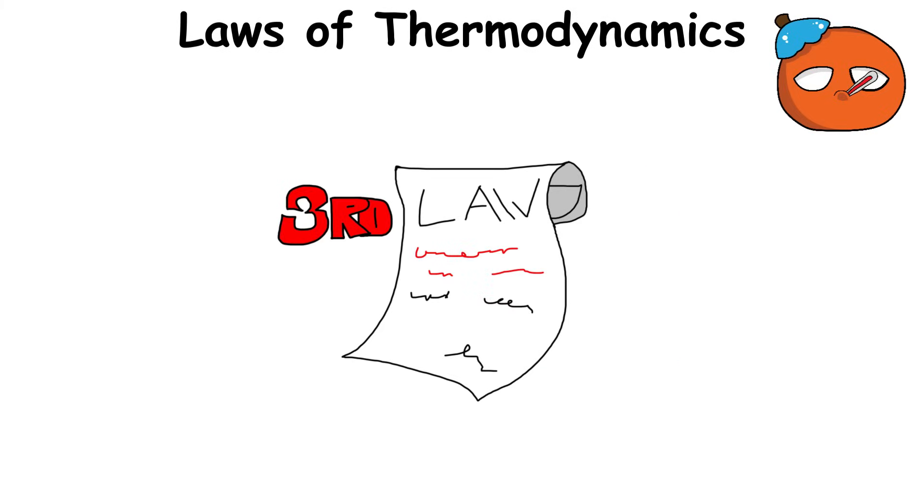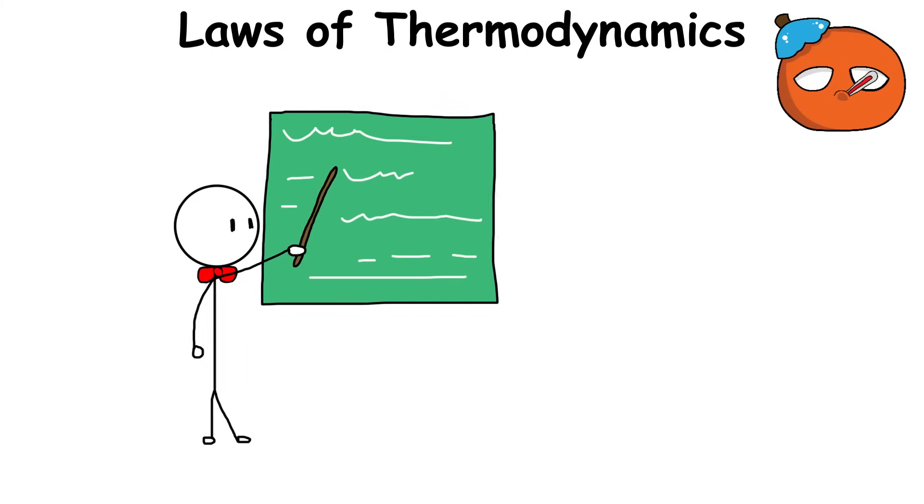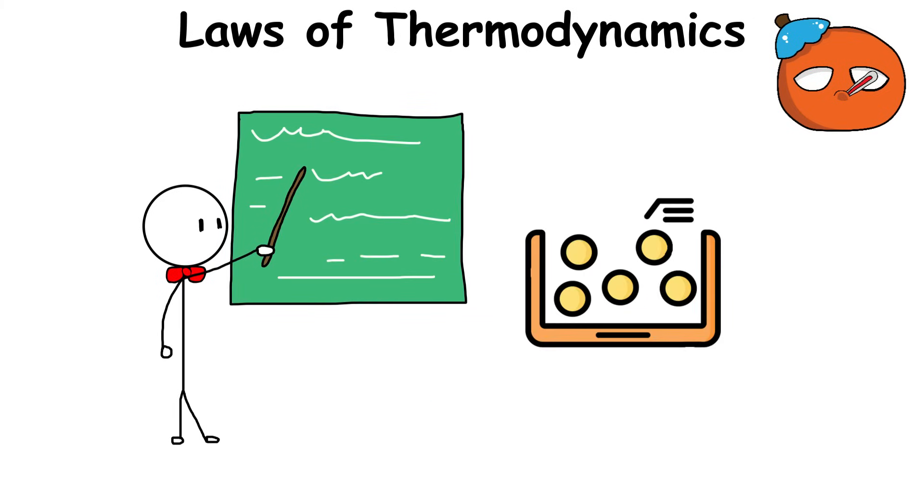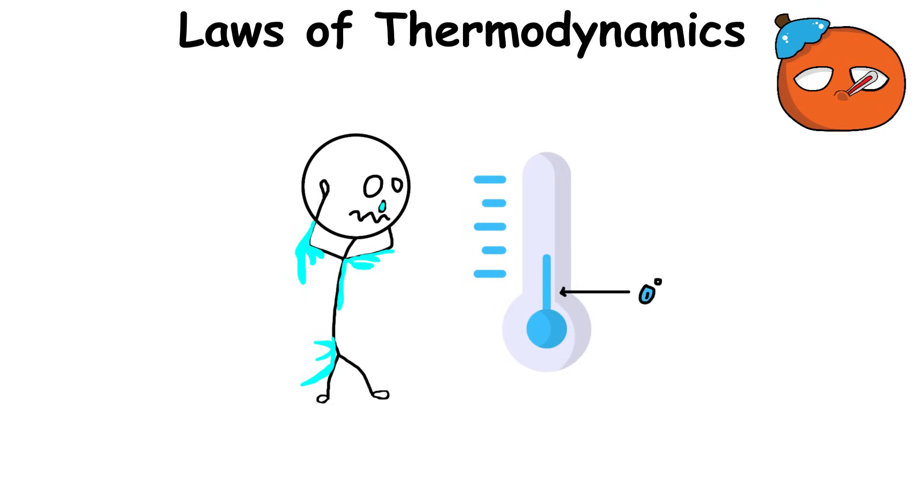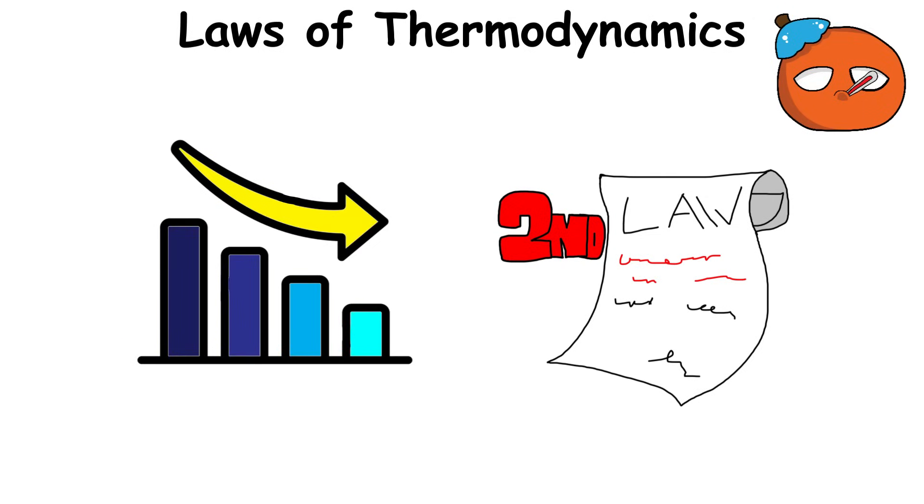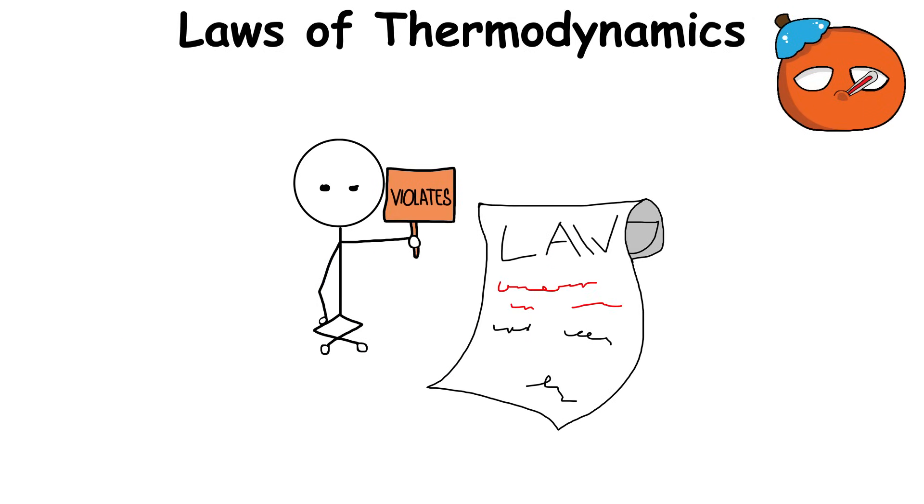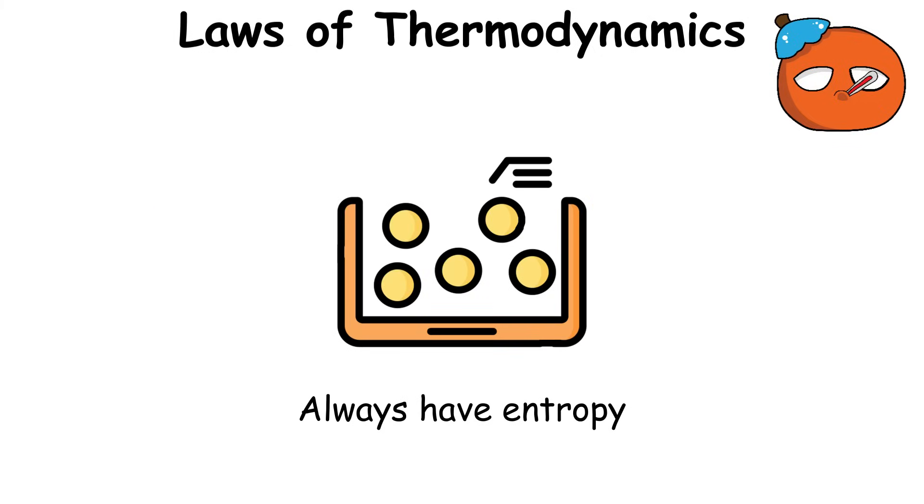Finally, the third law of thermodynamics says reaching absolute zero temperature is impossible. This is because the third law states that the entropy of a system also approaches zero as the system's temperature reaches absolute zero. As you get closer to zero, the randomness explained in the second law also decreases and goes down to zero. This violates the laws of physics because the second law states that a system will always have entropy.